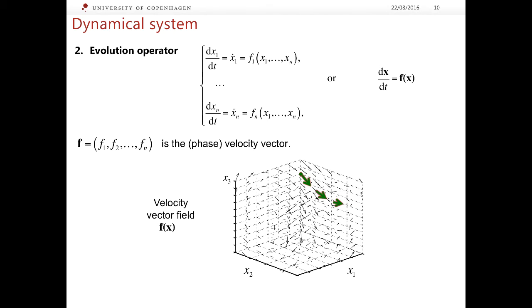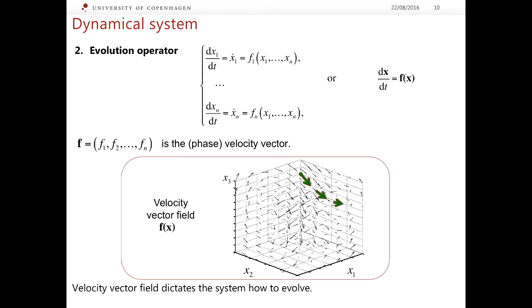As time goes by the state of the system changes and the velocity vectors are generally different for different states. The full collection of the velocity vectors corresponding to all possible states of the dynamical system is called the velocity vector field. It is important to appreciate that it is the velocity vector field which effectively dictates the system how to evolve. During evolution the phase point will be following what is called a phase trajectory and the velocity vectors will be tangent or they will be touching the phase trajectory at each point.